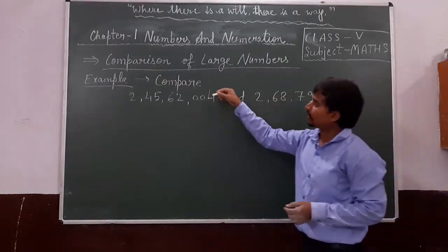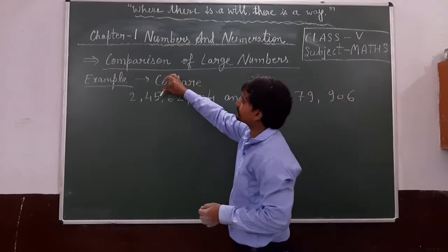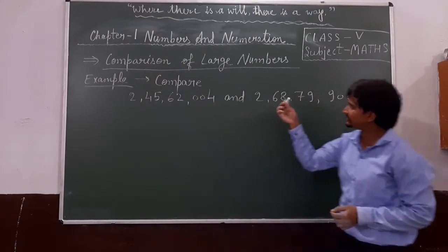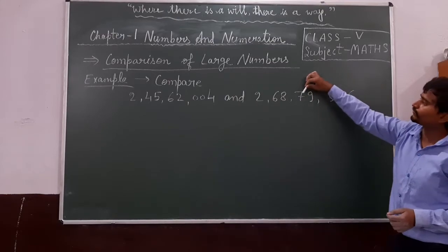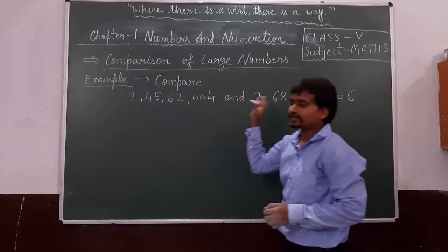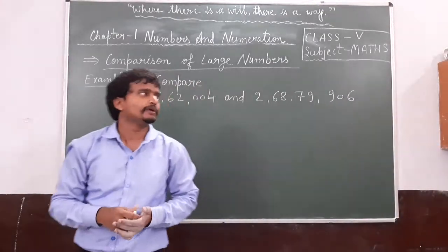In the first number there are 8 digits: 1, 2, 3, 4, 5, 6, 7, 8. And in the second number also: 1, 2, 3, 4, 5, 6, 7, 8. Both have an equal number of digits.